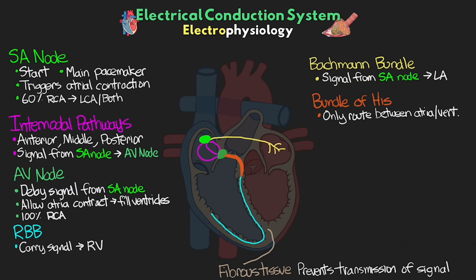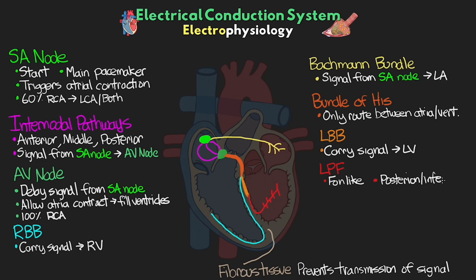Next we have our left bundle branch, or LBB — another branch off the bundle of His. As expected, this is another high-speed transmission fiber of cells responsible for carrying signal to fibers that will go to parts of the left ventricle. Due to the sheer size of the left ventricle, our left bundle branch actually divides into two more fibers to better cover the entire ventricle. The first is the left posterior fascicle, which is the first branch off the left bundle branch, and it has a fan-like appearance. It's responsible for carrying the signal to the posterior and inferior portions of the left ventricle.